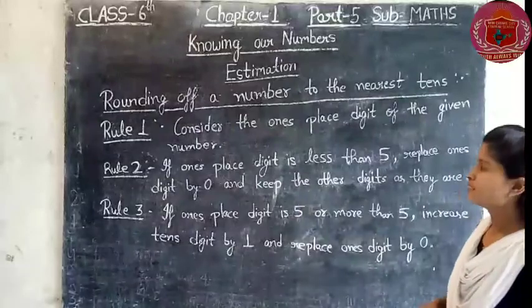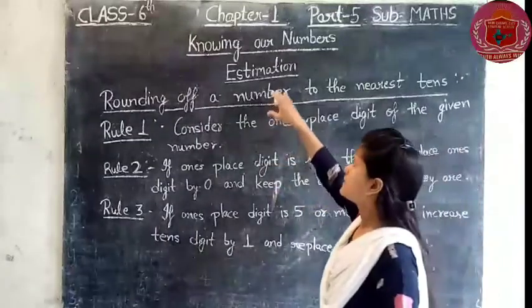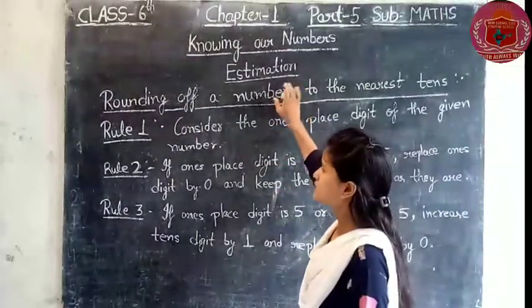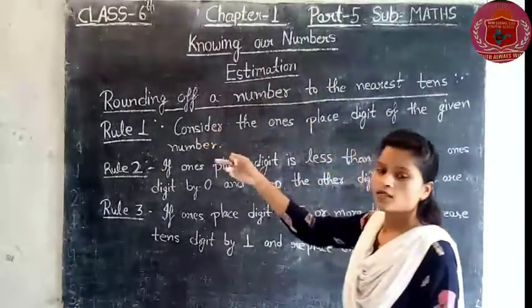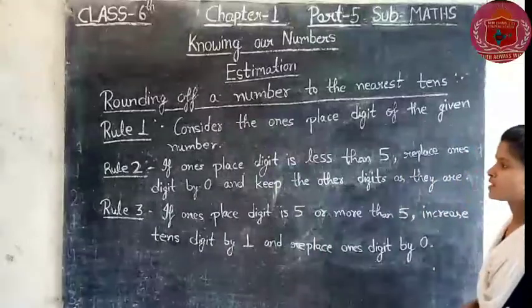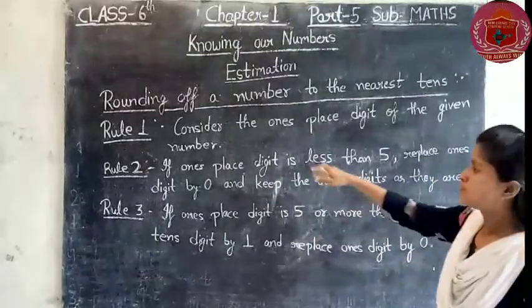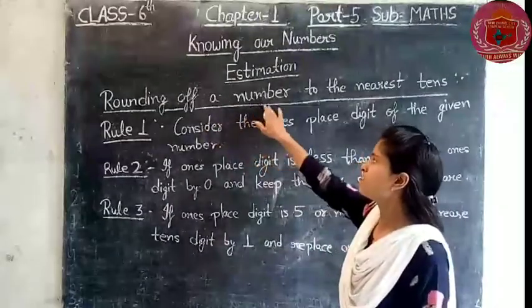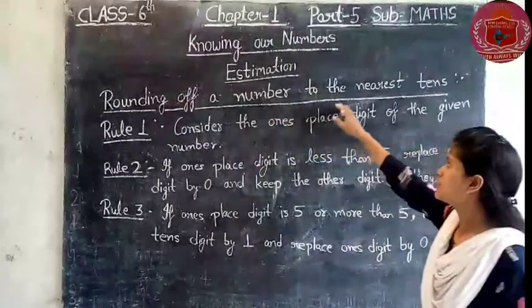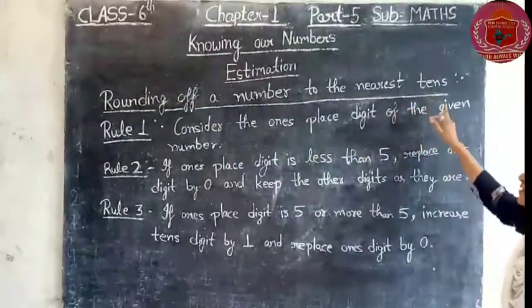So in this chapter, in estimation, we study about rounding of a given number. The topic is rounding of a number to the nearest 10.